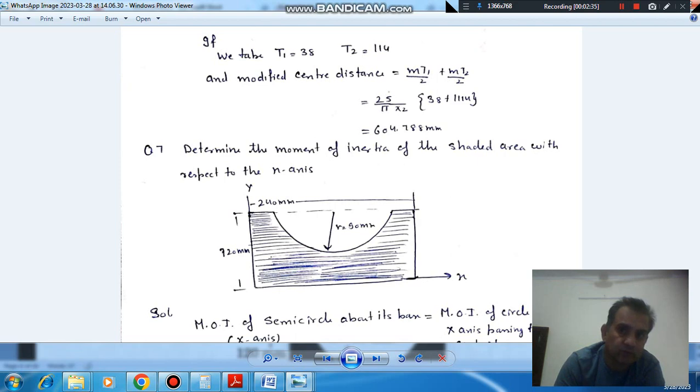So the center distance has to be modified, so modifying the center distance corresponding to T1 equals 38 and T2 is 114, it means mT1 by 2 plus mT2 by 2. And m is 25 by pi. So that completes this problem. Thank you.